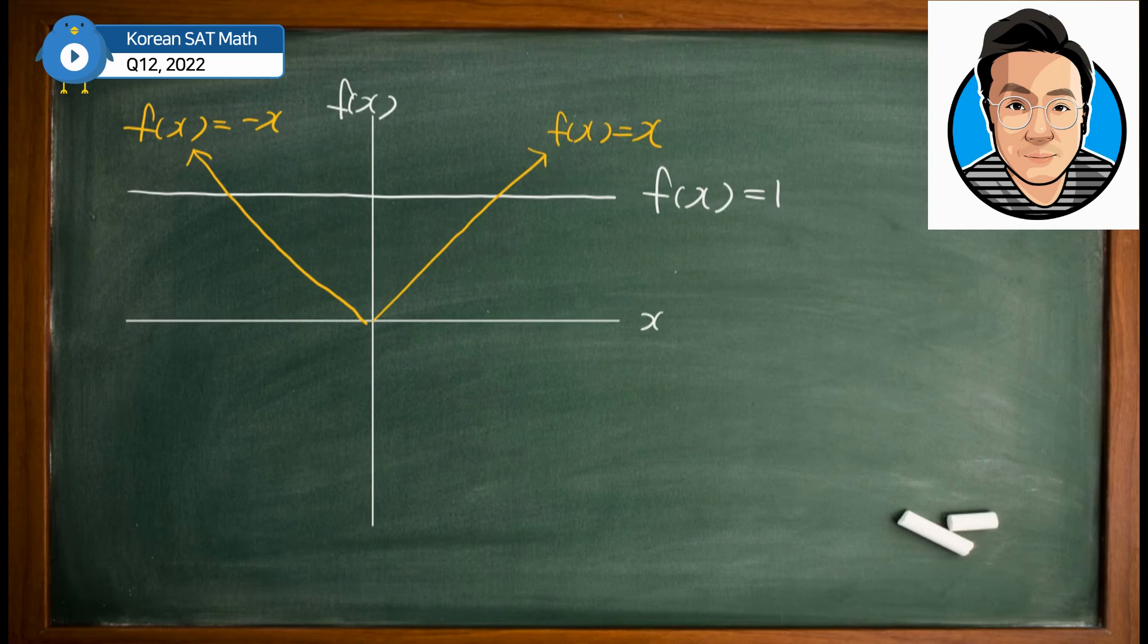And we know that the maximum value of f(x) has to be equal to 1. That has to be right here. And the minimum value has to be equal to 0, which has to be the origin. This is equal to 0.